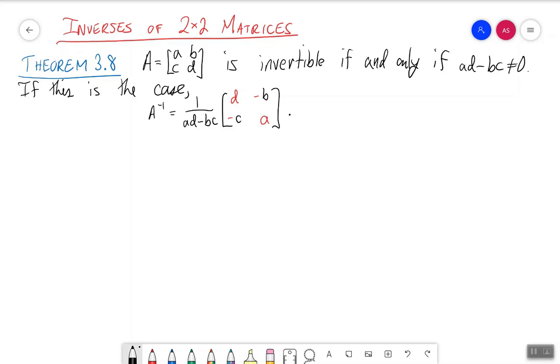A 2x2 matrix A equals A, B, C, D is invertible if and only if this quantity here is not zero. And if that's the case, then we can write the inverse explicitly using this formula over here.